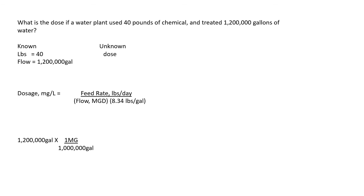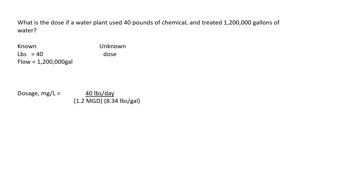There's a million gallons in 1 MGD, so dividing 1,200,000 gallons by 1 million gallons — the gallons cancel out — leaves 1.2 MGD. Plugging into the formula: 40 pounds per day divided by 1.2 MGD times 8.34 pounds per gallon. Doing the multiplication on the bottom first: 1.2 times 8.34 gives 10.008. Then 40 divided by 10.008 gives a dosage of 4.00 milligrams per liter.